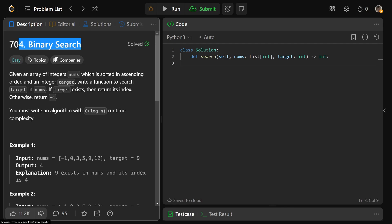Okay guys, so let's solve 704 on LeetCode, which is literally just a binary search. We're given an array of integers nums, which is sorted in ascending order, and there's an integer target. We want to write a function to search for target in the array. If that target exists, we want to return its index. Otherwise, we want to return minus one. You must write an algorithm with O of log n runtime complexity, and that's what binary search will do for us.